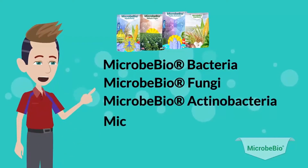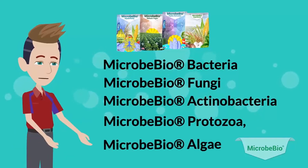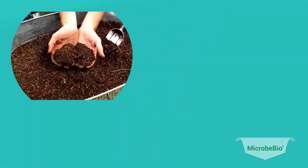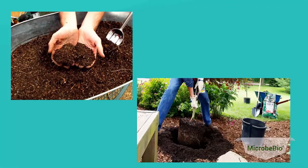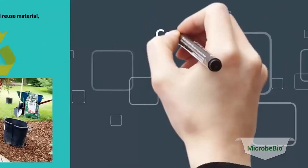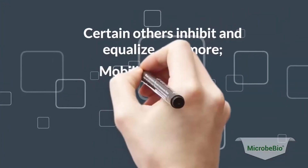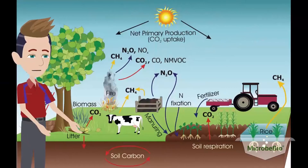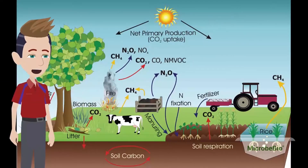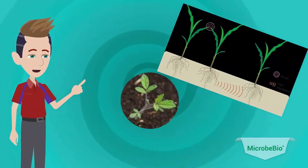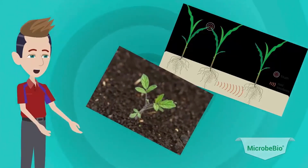MicrobeBio products are packed full of rich, dynamic inputs such as MicrobeBio bacteria, MicrobeBio fungi, MicrobeBio anaerobic bacteria, MicrobeBio protozoa, and MicrobeBio algae — all vital to creating a healthy soil environment for crops to prosper. These ingredients each carry out specific and critical tasks. Some act to recycle and reuse material; others function to regenerate and facilitate growth; certain others inhibit, equalize, mobilize, produce, or decompose. Our customized mix is a special blend of biological catalysts designed to work together harmoniously to cultivate proper nutrients in the soil and cycle them along with many other essential requirements to the plant's roots, improving overall health and vigor while maintaining soil quality and productivity perpetually.